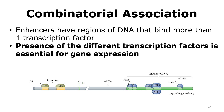Looking at another example — the crystallin gene — its enhancer DNA has binding sites for PAX6, SOX2, delta EF3, delta EF1, and LMAF, all of which are transcription factors. For the expression of the crystallin gene, all of these transcription factors must be present on the enhancer DNA for expression to occur. Thus, combinatorial association is often necessary for the expression of genes and is a key way to regulate gene expression.